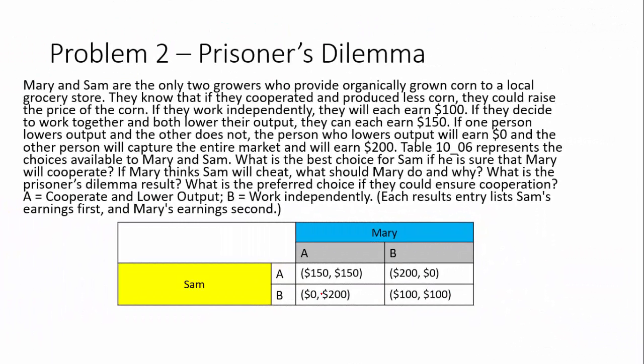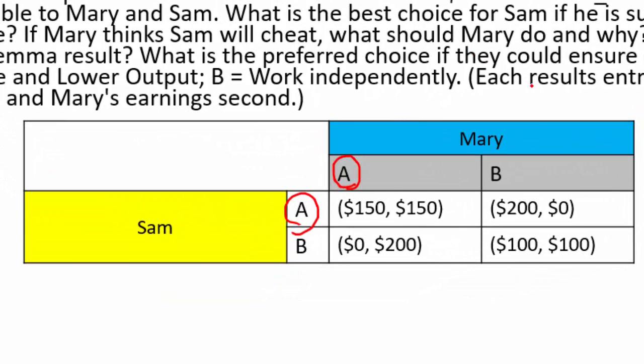For problems two and three we'll be talking about the prisoner's dilemma, also called in business a duopoly. We have Mary and Sam, who grow organically grown corn and sell it to a local market. They know that if they cooperate, both will make $150 profit. But if they work independently of each other, total independence gives them $100 each. So cooperation is obviously better.